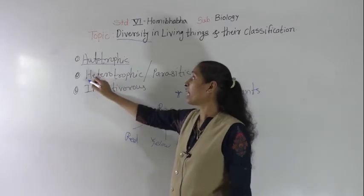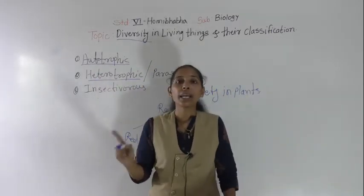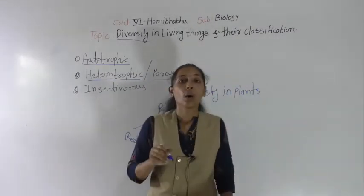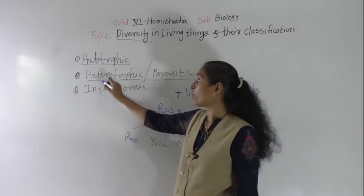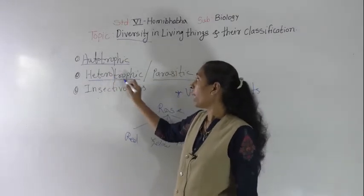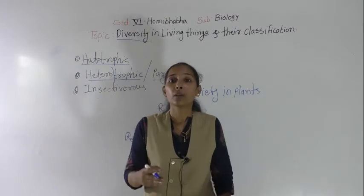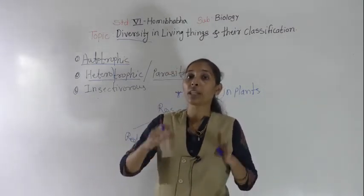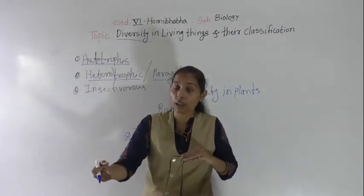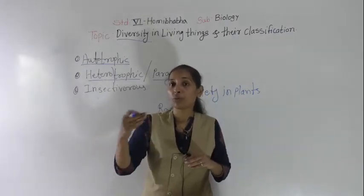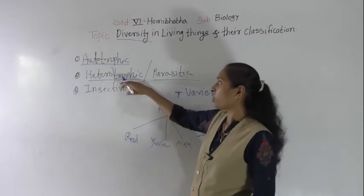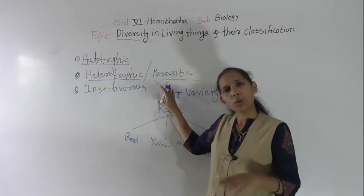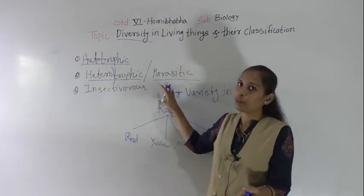Next, there are certain plants which are heterotrophic, or we can say parasitic. Heterotrophic means hetero means other and trophic means nutrition — those who depend for their food on others. That category of plants is called heterotrophic or parasitic plants. Parasitic means those who depend on others for food. An example here is the dodder plant, which is a parasitic or heterotrophic plant.